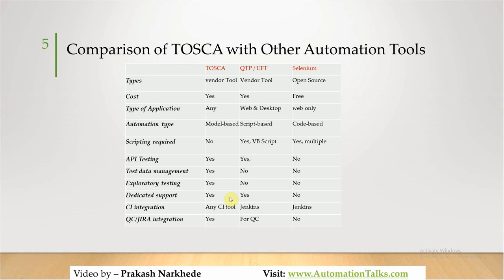Continuous integration is a must nowadays — Tosca, QTP, and Selenium all support most CI tools, not just Jenkins. For QC and Jira integration, Tosca supports both natively; QTP supports QC well but requires external work for Jira; Selenium uses the Jira REST API but that's a third-party dependency requiring scripting. Overall, Tosca looks very strong in this comparison, though its cost leads many organizations to choose Selenium, which also has a large community and abundant learning resources.